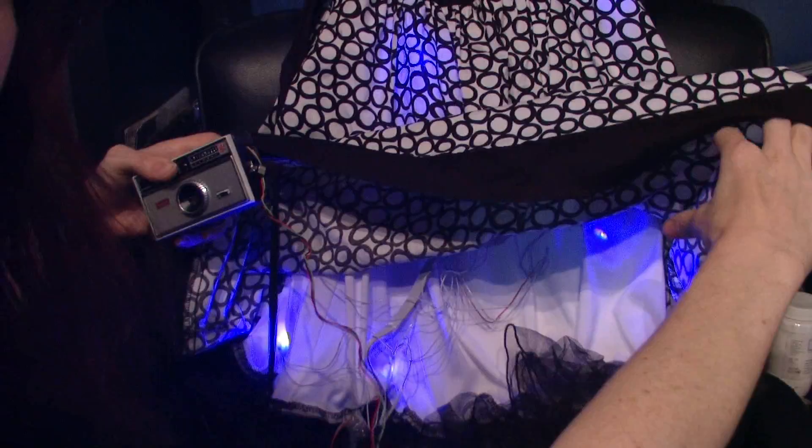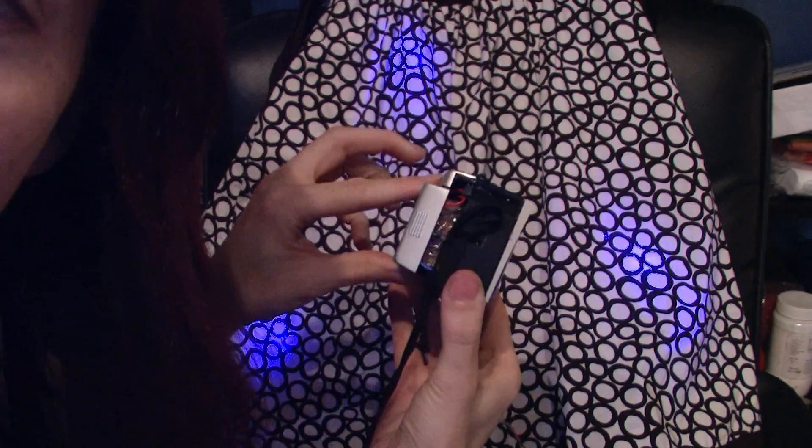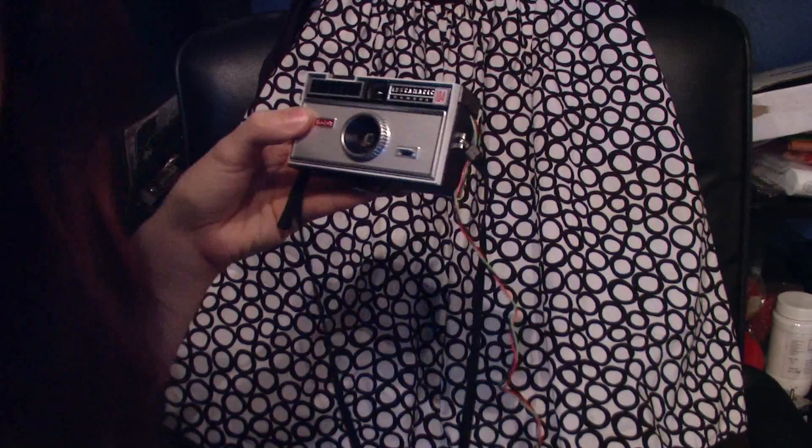But I embedded LEDs through a delay chain inside of the dress, so you can look underneath, just a bunch of wires and stuff and LEDs. And then I hid all the electronics inside of this old Instamatic camera, so the electronics and batteries are inside.